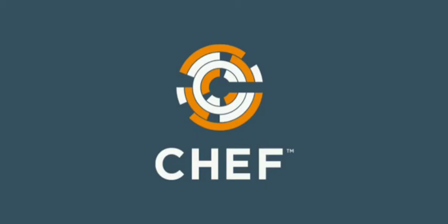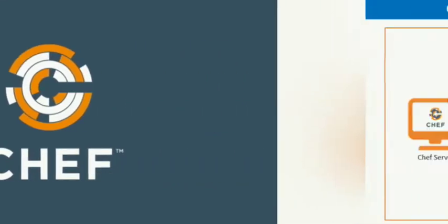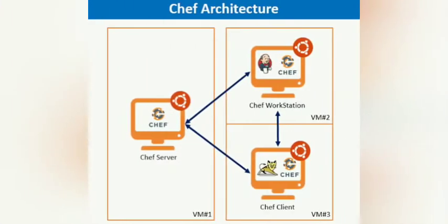Hello and welcome to another episode of Worst Techie. Today's subject is Chef. Chef is an automation tool that provides a way to define infrastructure as code. Infrastructure as code simply means managing infrastructure by writing code rather than using manual processes. It can also be termed as programmable infrastructure.